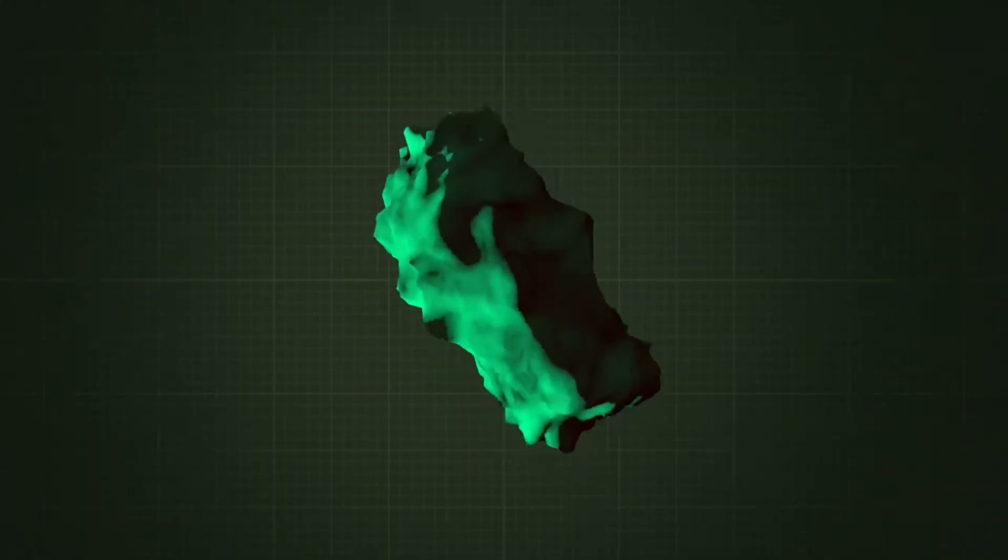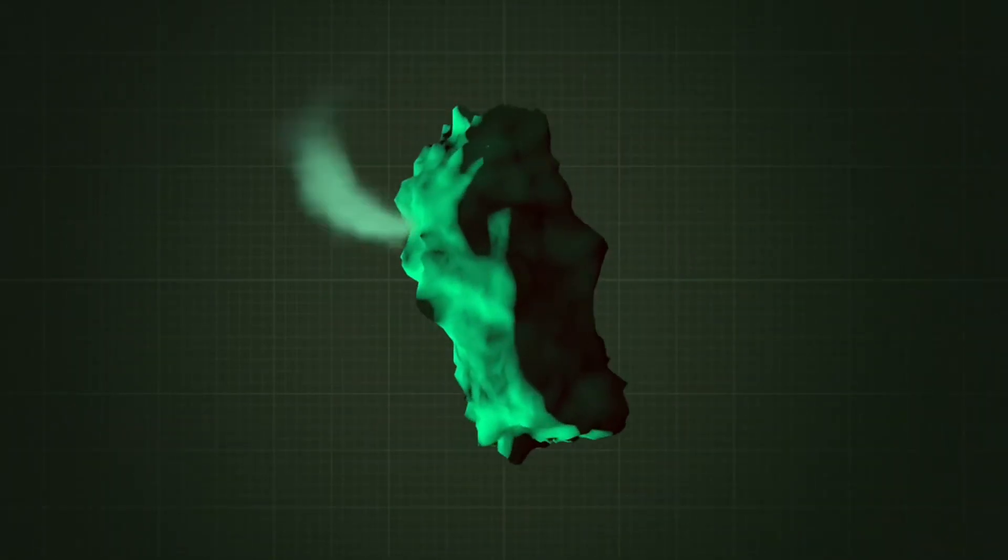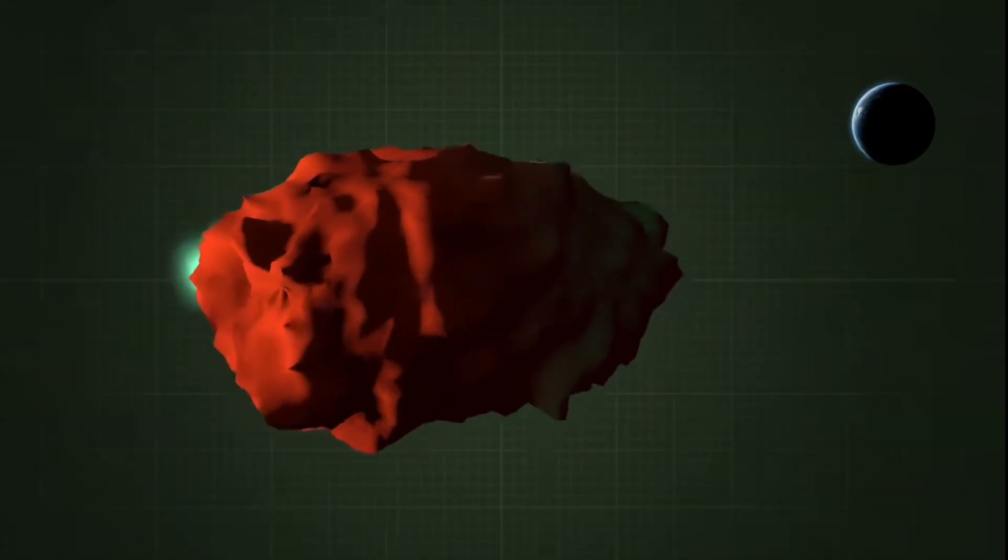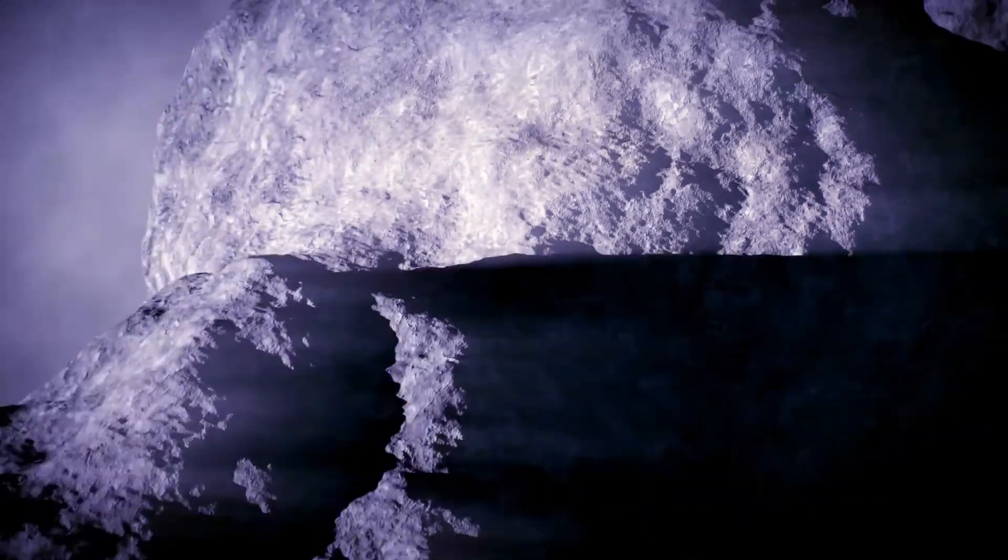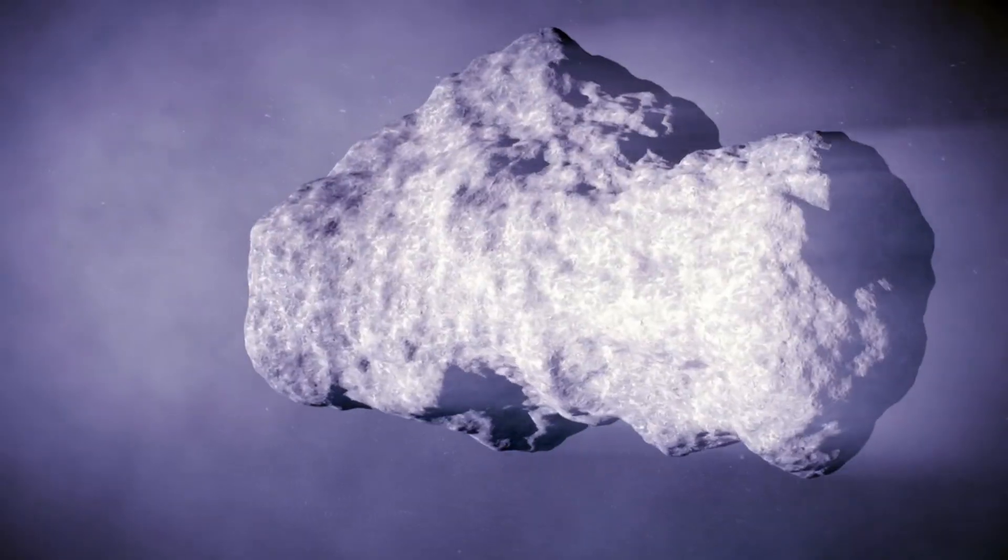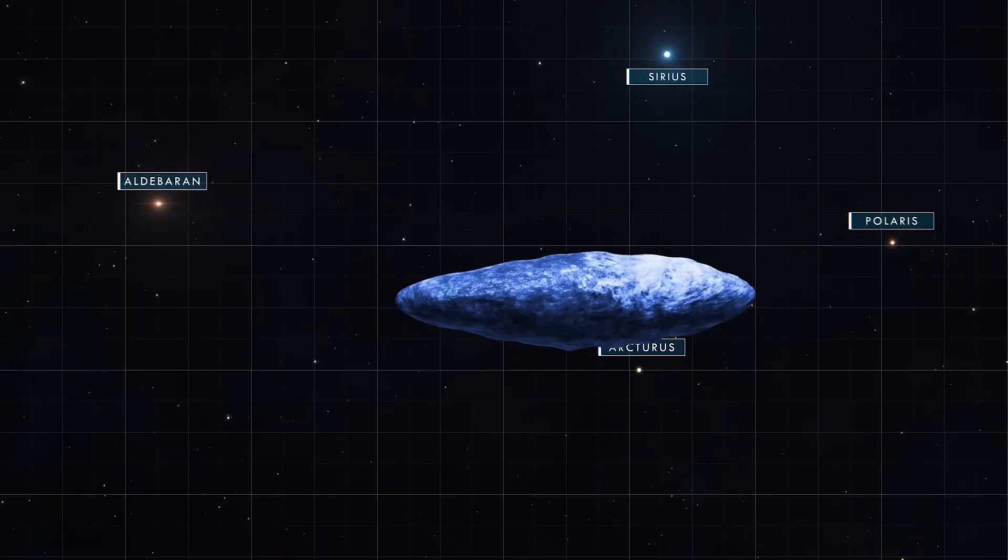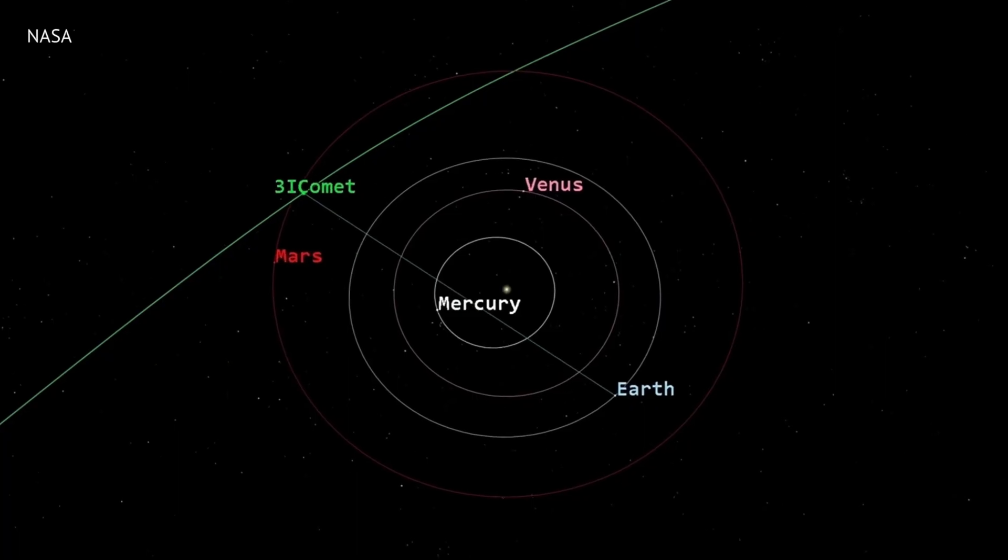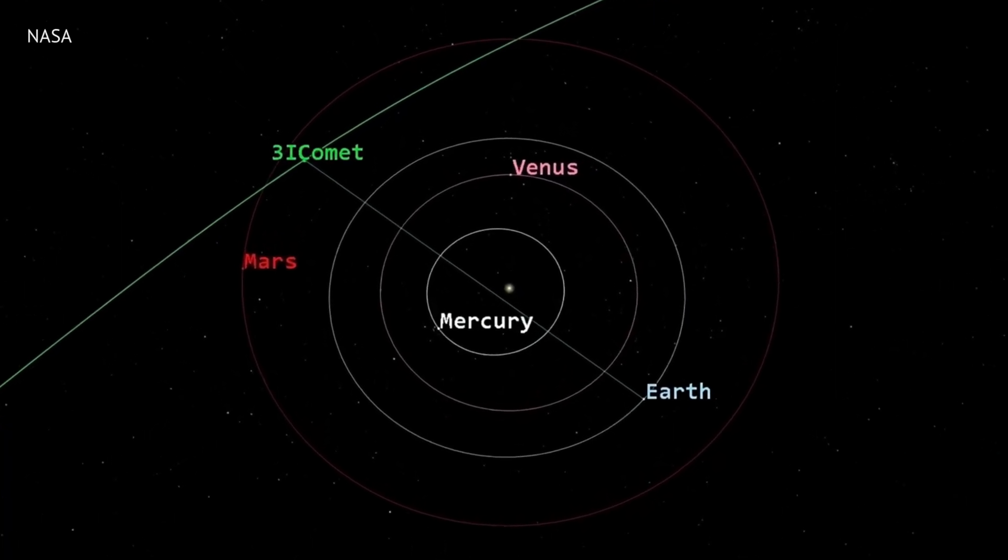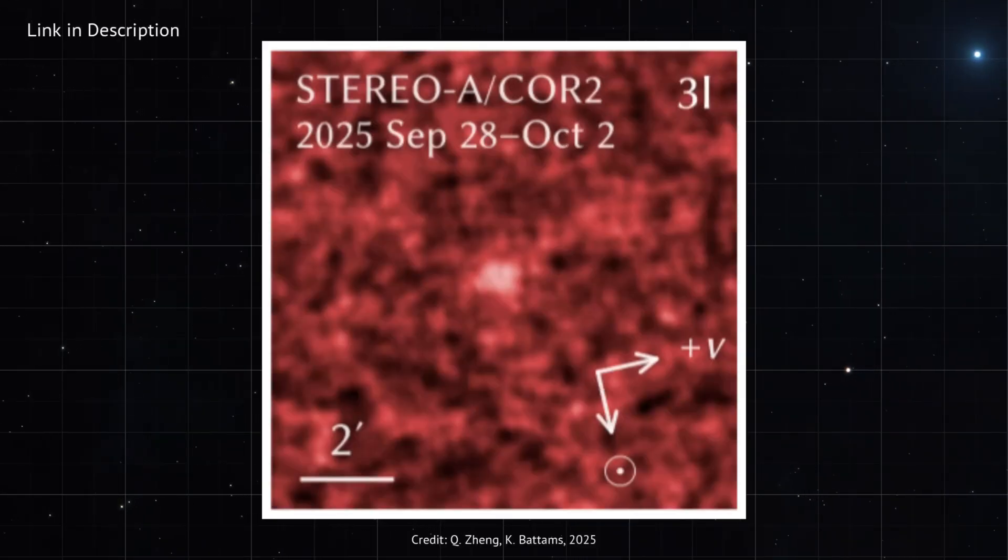These gases escape from the nucleus, and that's when the sun's ultraviolet radiation hits them. It strips away electrons and turns neutral molecules into charged ions. Then the solar wind takes over. It's a constant stream of charged particles flowing outward from the sun at hundreds of kilometers per second. It sweeps these ions away, creating that long luminous tail. The tail always points directly away from the sun, no matter which direction the comet is traveling.